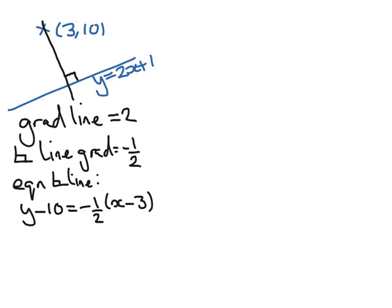That's the equation of the black line in the diagram, and the blue line is y equals 2x plus 1. We want to find out where those two lines intersect with each other, so we're going to solve those equations. Instead of y, I can write 2x plus 1, so that's 2x plus 1 minus 10 equals minus a half times x minus 3.